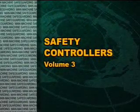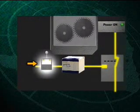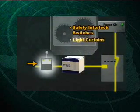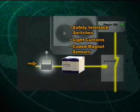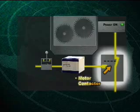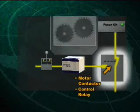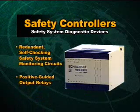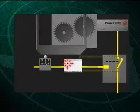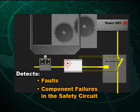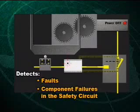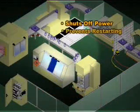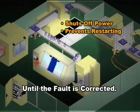Let's begin with a definition. Safety controllers are safety system components connected between machine guarding emergency stops or presence sensing devices — such as safety interlock switches, light curtains, or coded magnet sensors — and the machine's primary stop control element, such as a motor contactor or control relay. They contain redundant self-checking system monitoring circuits and positive guided output relays. Their purpose is to detect faults or component failures that may compromise safety system performance, and in such instances, shut off and prevent restarting of the machine until the fault has been corrected.